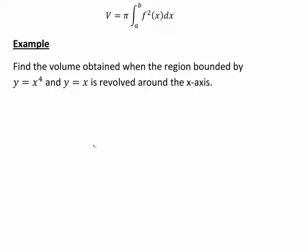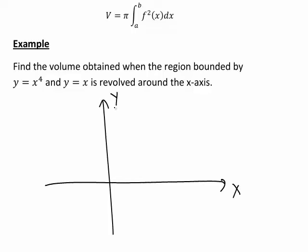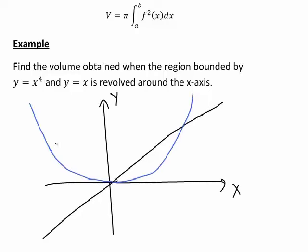How will we approach this problem? The first good step is always to draw a graph of the situation. y equals x is a straight line of gradient 1 through the origin. y equals x to the 4 takes values very close to 0 near the origin, but starts to get steeper and increases quite rapidly once you get above x equals 1. In blue, I've now added to the sketch an approximate graph of y equals x to the 4.